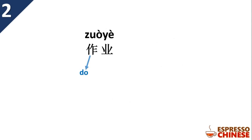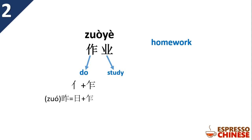作业. 做 means 'to do'. Look at this character — on the left side, we have the person radical, because it must be a person who does something. On the right side, it's a sound radical. Another character, 昨 from 昨天 ('yesterday'), has the same right-side component as 做, because they sound similar. For 昨, you find the sun radical, because it relates to time. 业 means 'to study'. Together, 作业 means 'homework'.